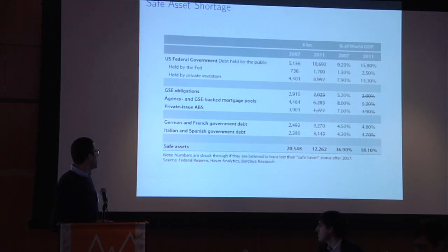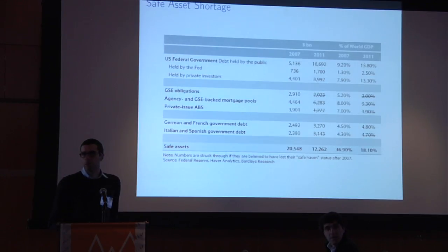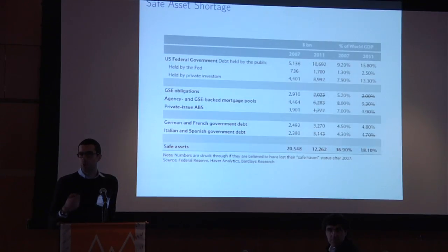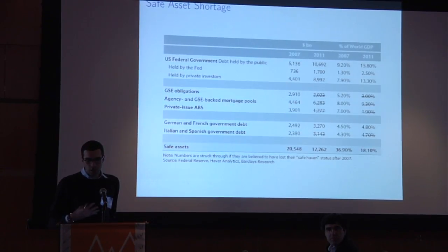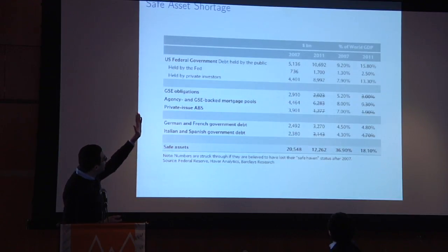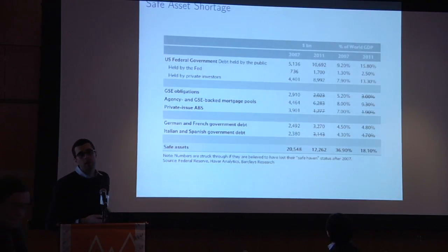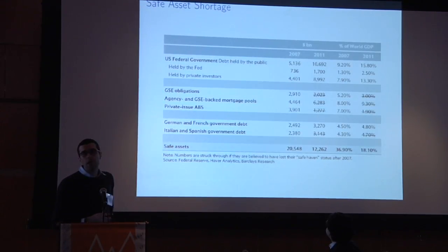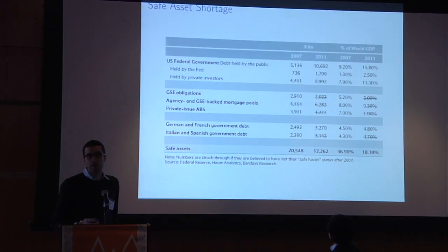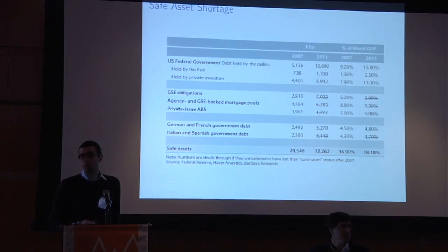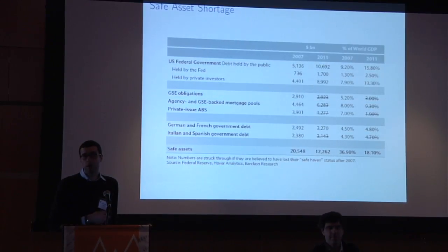The first stylized fact comes from a table I took from a presentation by Barclays Research. It seeks to document — and this is a very hard thing to do — what is the supply of safe assets as a fraction of world GDP. They computed this in 2007 at the onset of the recent financial crisis and in 2011, well into the financial crisis. They conclude that the supply of safe assets shrunk from something like 37 percent of world GDP to 18 percent.